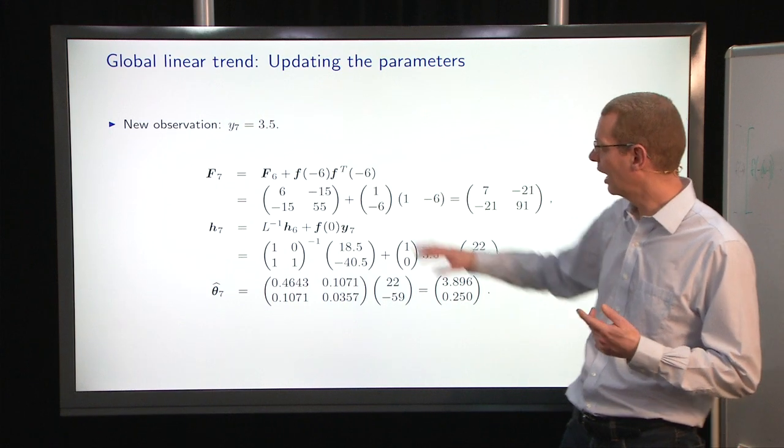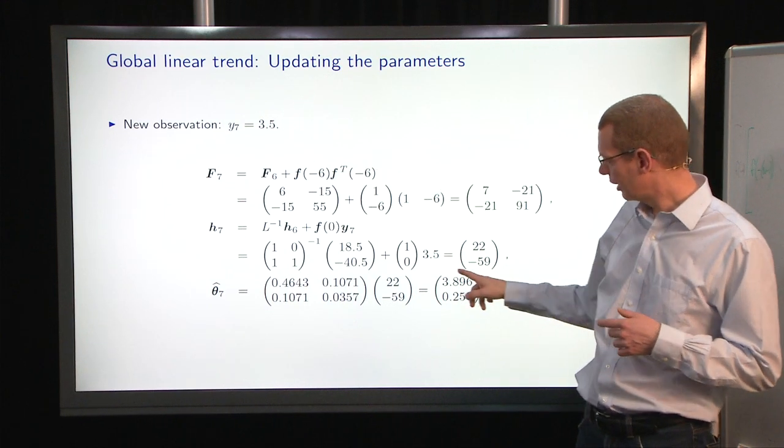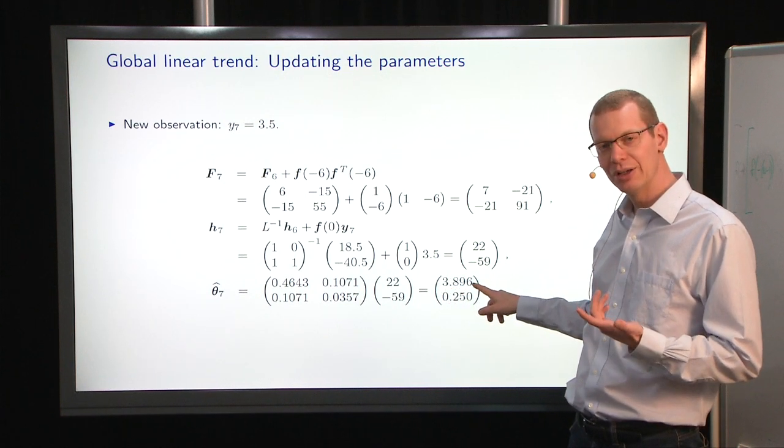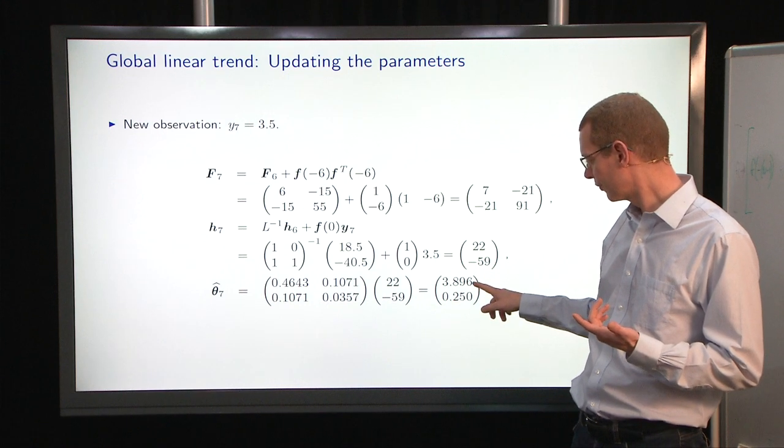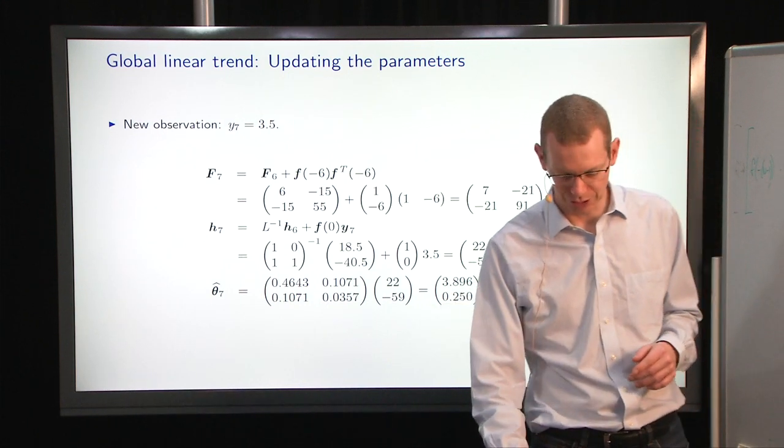Notice here that we have an observation that was below the predicted value, which has the influence that our new estimate of the intercept is actually lower than before, and our slope is also a little bit lower than what we had before.